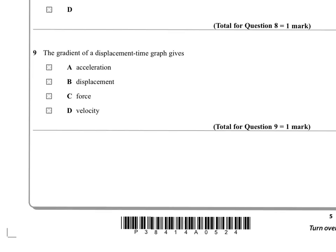Question 9. The gradient of a displacement-time graph gives which of these? Well, displacement time, displacement over time is what the gradient will be. That's velocity. Again, just book work, just learning definitions.